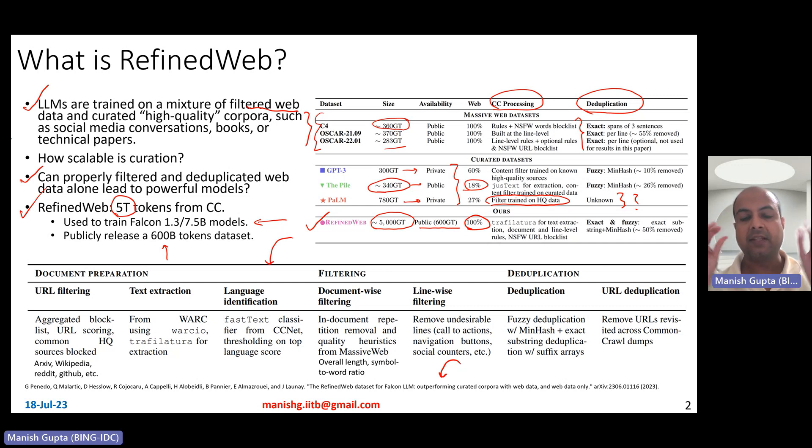How is RefinedWeb pre-processed and filtered or deduplicated? More details are actually in the table below. The way RefinedWeb has been pre-processed in some ways is using three different steps: data preparation, filtering, and deduplication. Amongst these three steps, the sub-steps are as follows. In document preparation, first URL filtering was done, then text extraction, and language identification. What does URL filtering mean? You aggregate block lists from several places. You also do URL scoring and remove URLs with low scores, and you also remove basically spam URLs, adult URLs, things of that kind. You also remove those which are common high-quality sources. The idea behind creating RefinedWeb was to actually create a part of the web which is not curated at all. Therefore, they on purpose removed high-quality data sources also like Archive, Wikipedia, Reddit, GitHub, etc., just to show the power of the filtered web even without curated datasets at all.